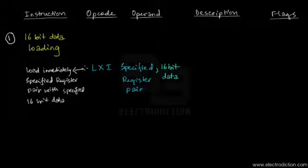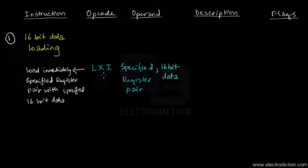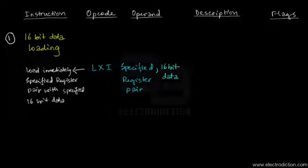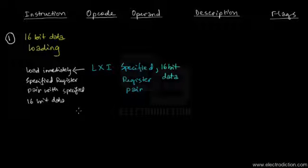The instruction that falls under this category is the LXI, which means load the register pair immediately. The operands of this particular instruction are a specified register pair and a corresponding 16-bit data, which we're supposed to load into the specified register pair. LXI loads the specified register pair with the 16-bit data.